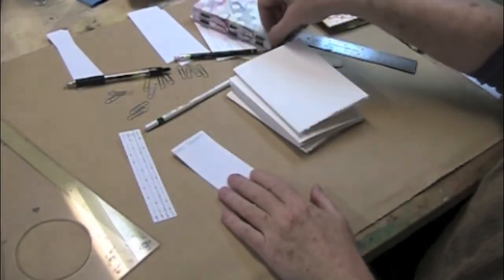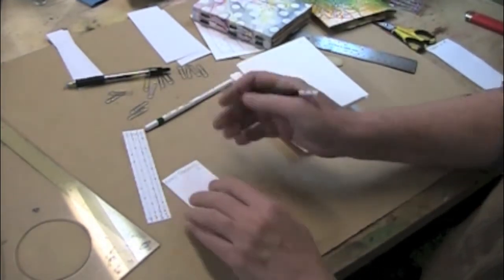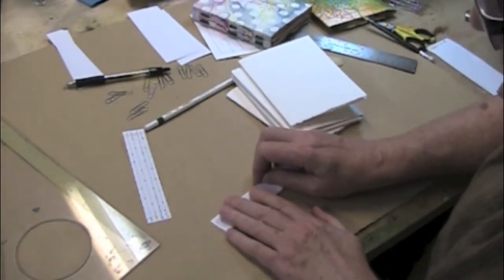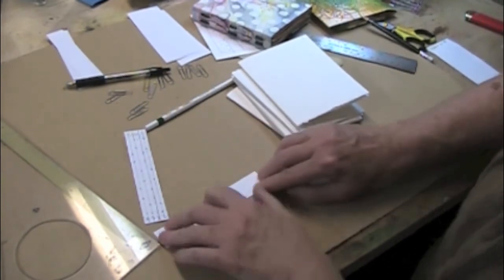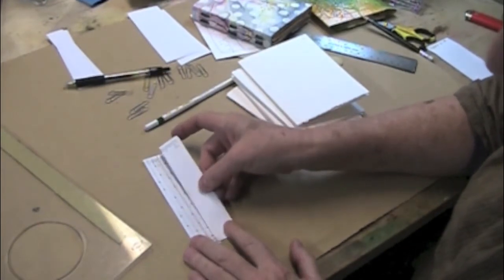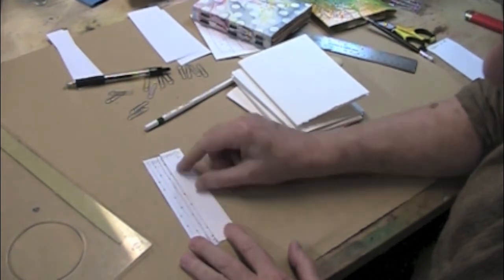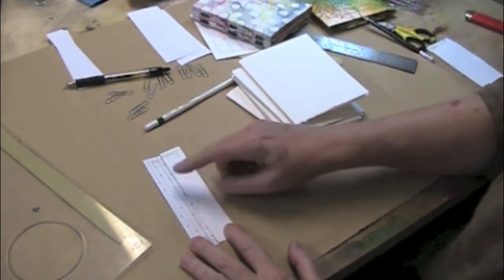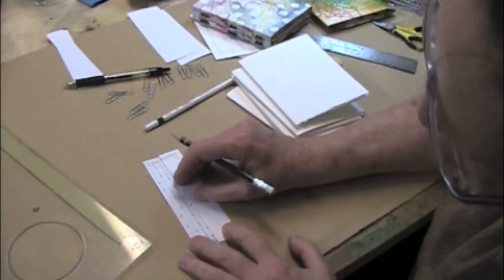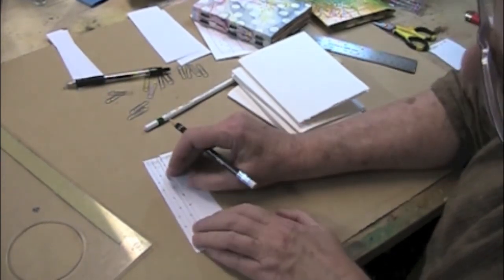So we're going to take our piercing template, we're going to mark that as well. We're going to fold it in half width-wise and line it up with the first template marks here. And I'm just going to make a mark at each, just transfer the marks over.